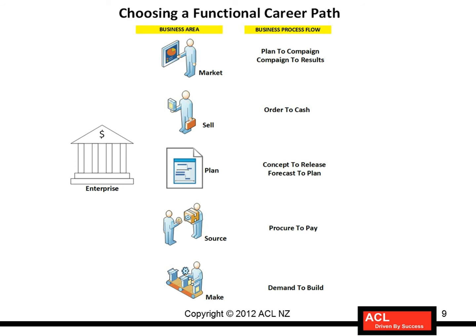On the sales side, you've got a process flow called 'Order to Cash.' Within that, there are several children process flows. Order to Cash is a process wherein an order is taken, that order is fulfilled and sent to the customer, and you bill the order to receive the money — as simple as that.